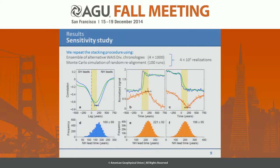To test it further, I performed a Monte Carlo simulation. The uncertainty in chronology is the largest contribution to the uncertainty, so I made 4,000 alternative chronologies for WAIS Divide — an ensemble that envelopes the true chronology — and randomly perturbed the alignments of the individual events to get an uncertainty estimate. For the warming in the Northern Hemisphere, the lead is about 220 years ± 90 years. Similarly for the cooling, it's again about 200 years.